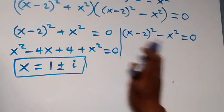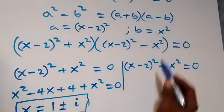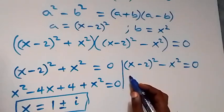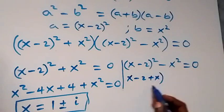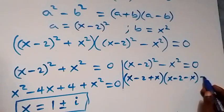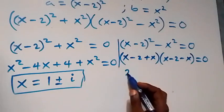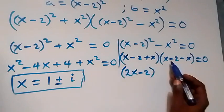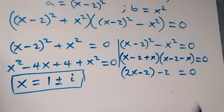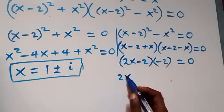From the second case, (x minus 2) squared minus x squared equals zero. We again apply the difference of two squares, with (x minus 2) as a and x as b. This gives [(x minus 2) plus x] times [(x minus 2) minus x] equals zero, which simplifies to (2x minus 2) times (minus 2) equals zero.